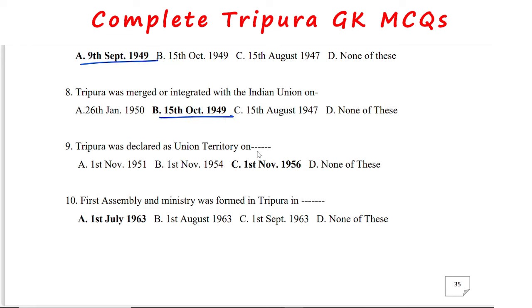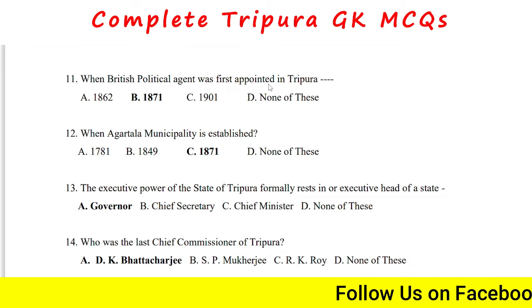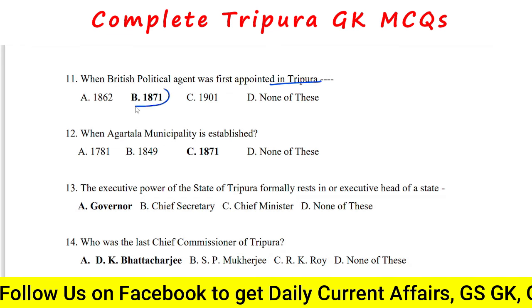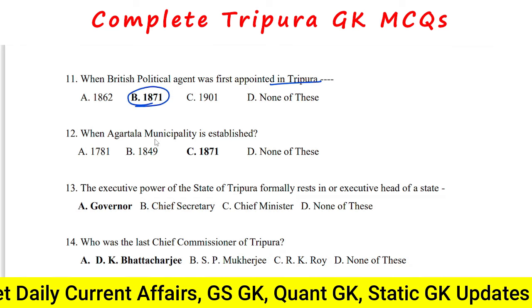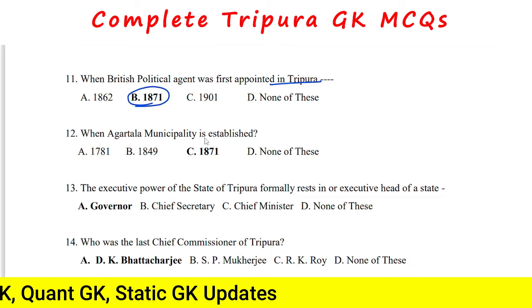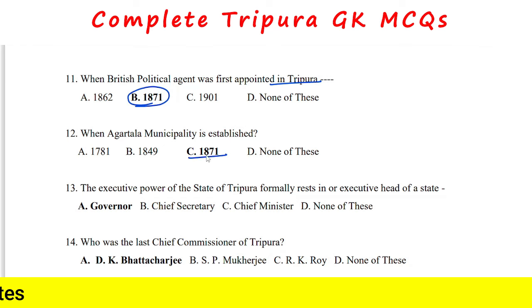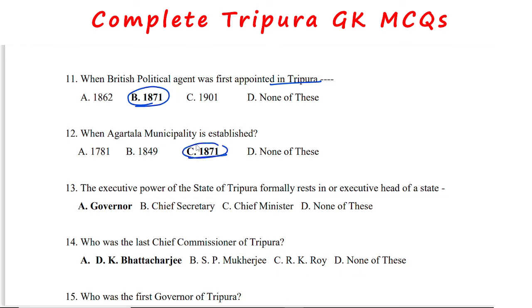Tripura was declared a Union Territory on 1st November 1956. The first assembly and ministry was formed in Tripura in 1963 on 1st July. The first British political agent was appointed in Tripura in 1871. Agartala municipality was established in the year 1871. The executive head of the state is the Governor.